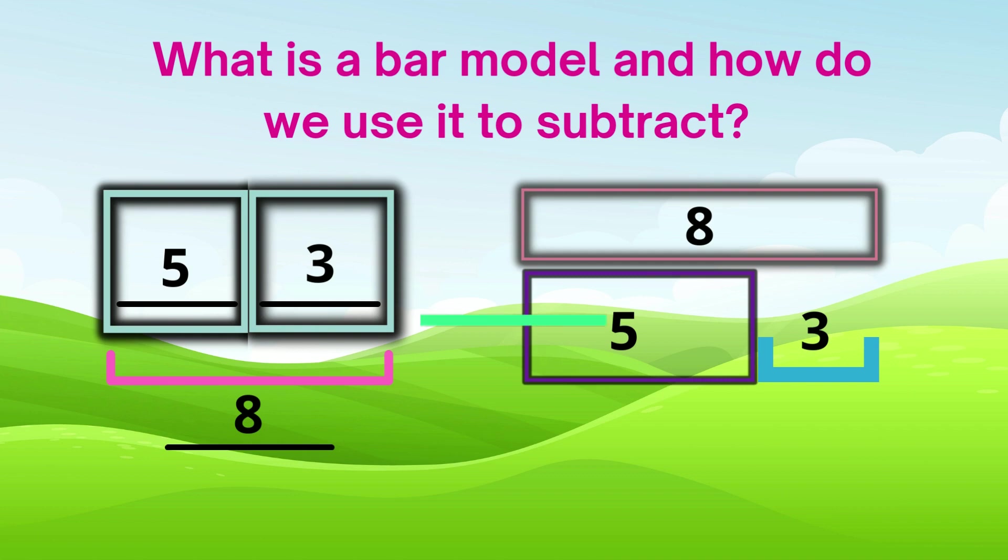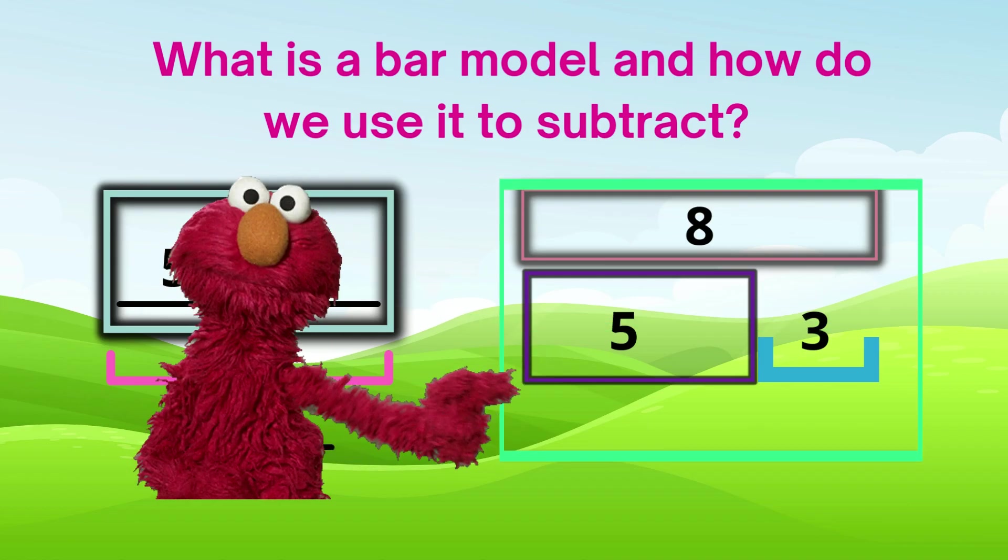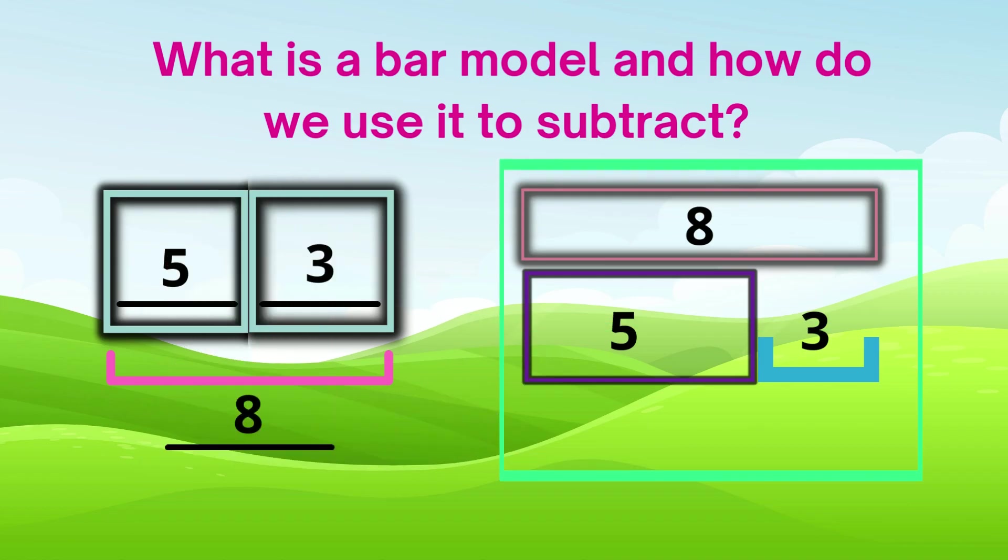The one we will use for subtraction is this one right here, where the bar for the whole is on top. That bigger, larger bar that says 8, that's the whole. The whole amount is 8.